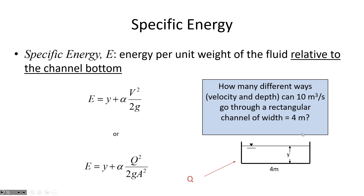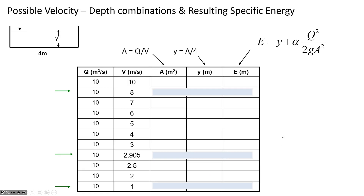If we increase or decrease the slope, we'd see different depths and velocities. We could construct a table with different velocities - 10 meters per second would be a really fast velocity on a steep channel, or at the other extreme, one meter per second on a mild slope. They all have the same flow rate: velocity times area equals Q. So at high velocity, area is small, and at low velocity, area is large.